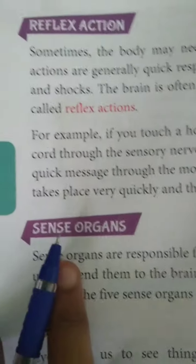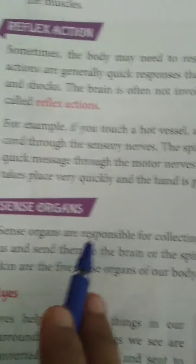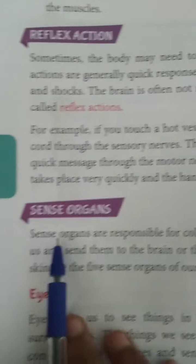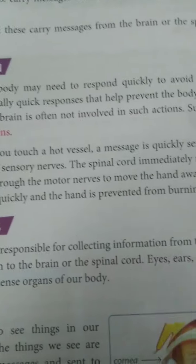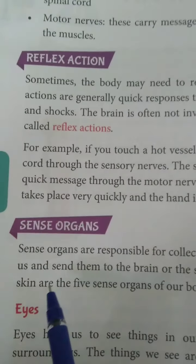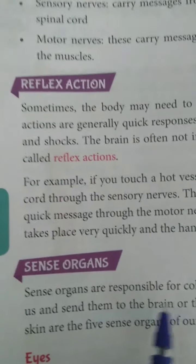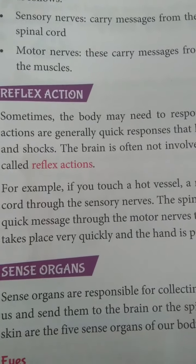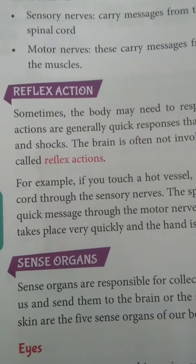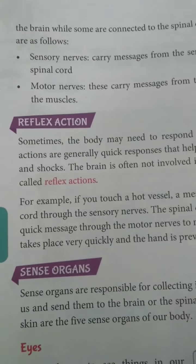The next topic is sense organs. Sense organs are responsible for collecting information from the world around us and sending it to the brain or the spinal cord. Ears, eyes, nose, tongue, and skin are the five sense organs of our body.